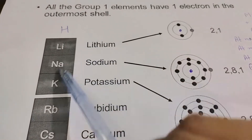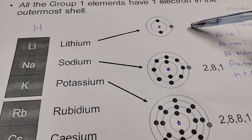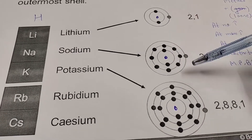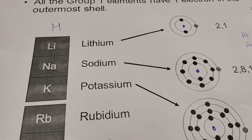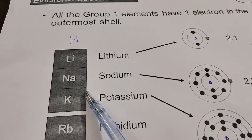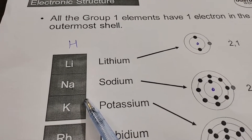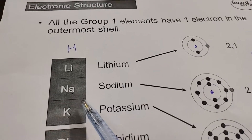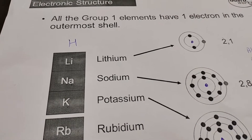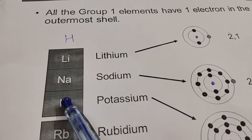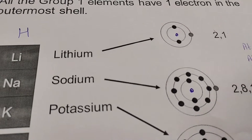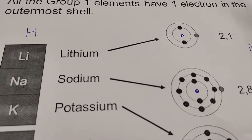All group one elements like lithium, sodium, and potassium contain one valence electron. That is why we have placed hydrogen in group one — because it also contains only one electron in the outermost shell, one valence electron. Otherwise, hydrogen is a non-metal.